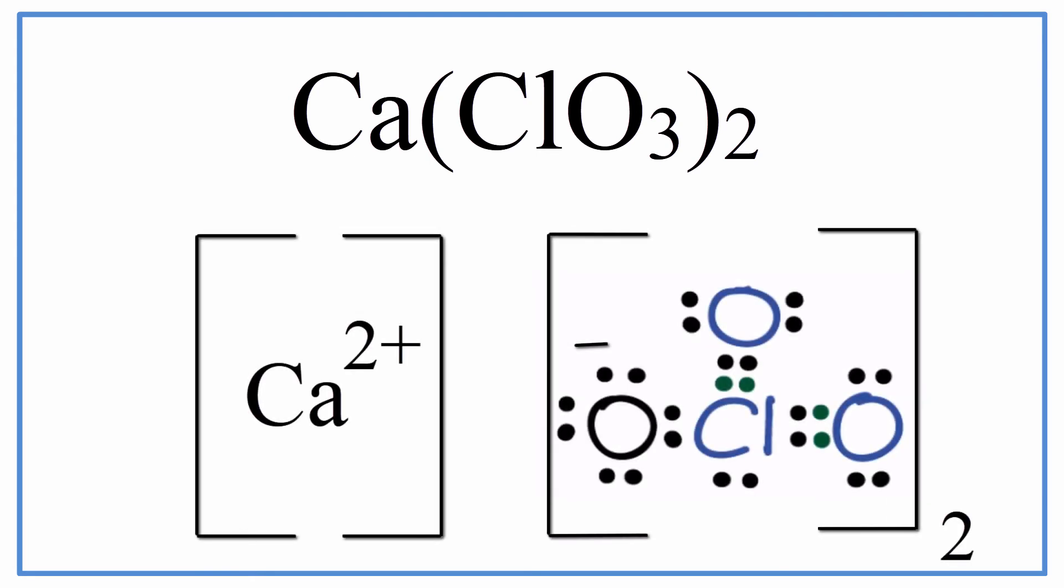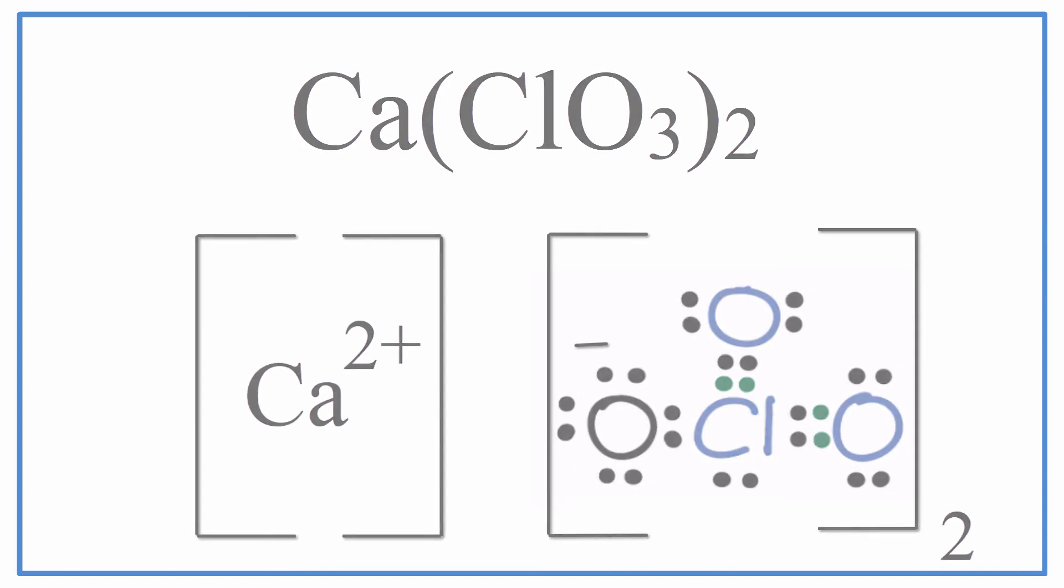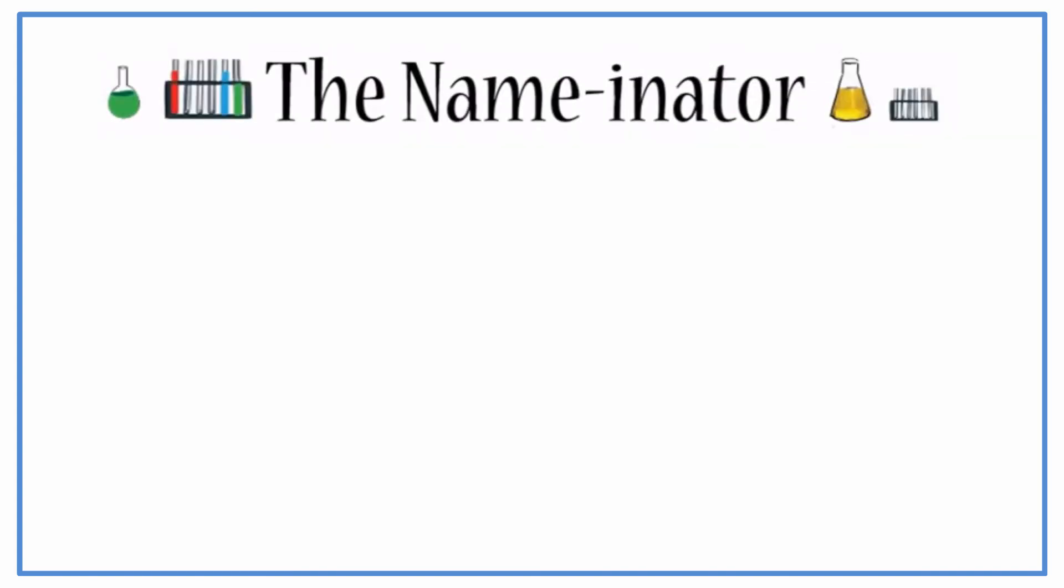Note, this represents a formula unit, and that Ca(ClO3)2, that calcium chlorate, is normally found in a crystal consisting of many formula units.